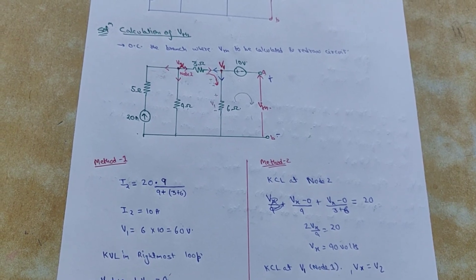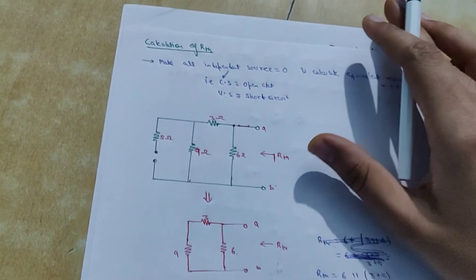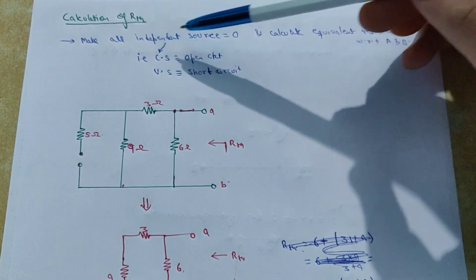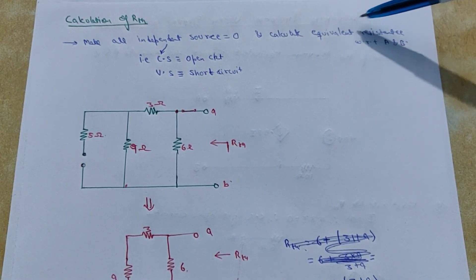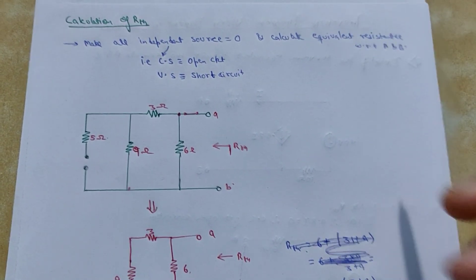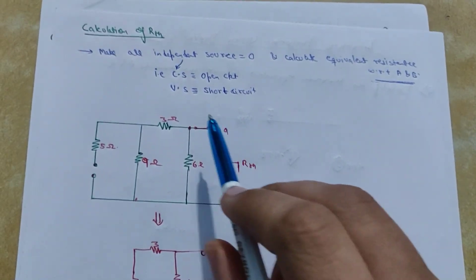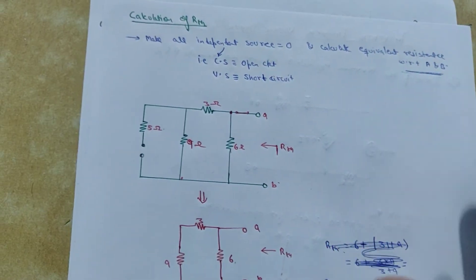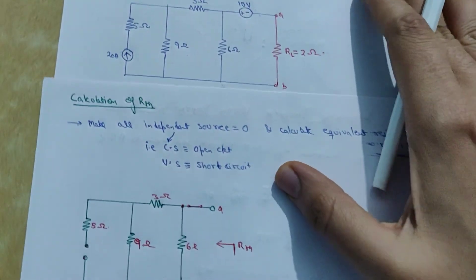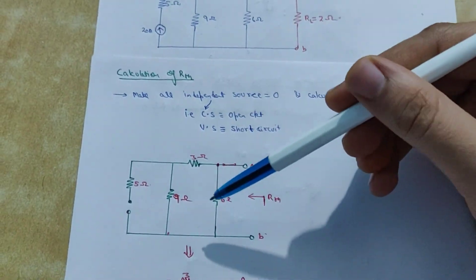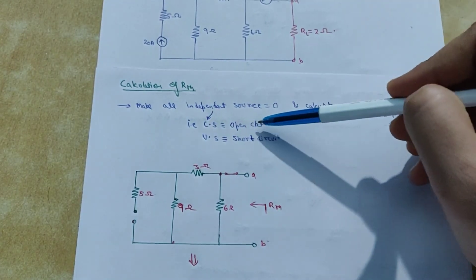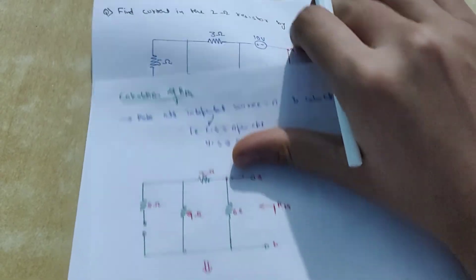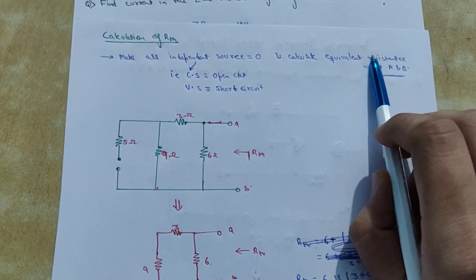The second step in Thevenin analysis is to calculate the Thevenin resistance RTH. The basic step is to make all independent sources equal to zero and calculate the equivalent resistance with respect to AB. Independent sources equal to zero means the current source is open circuited and the voltage source is short circuited. So in our circuit, the current source is open circuited and the voltage source is short circuited.